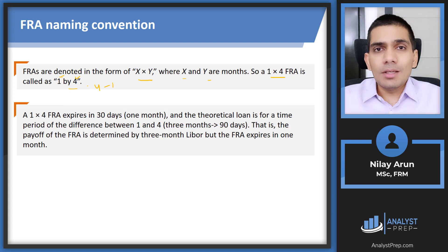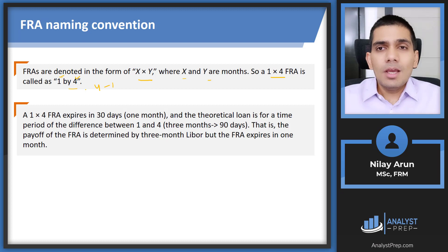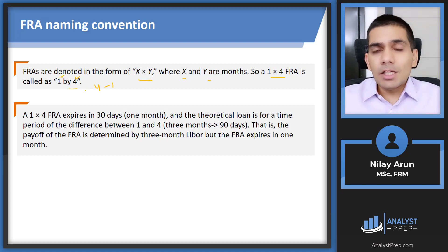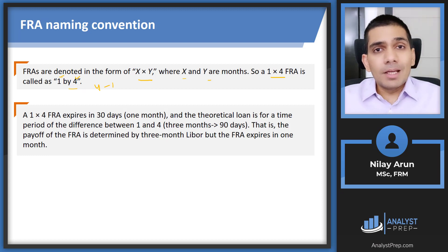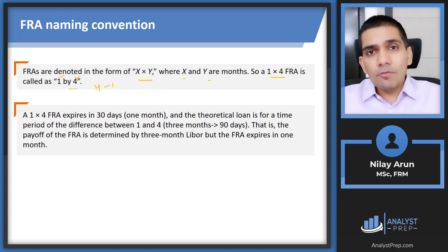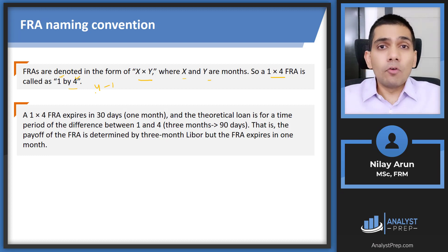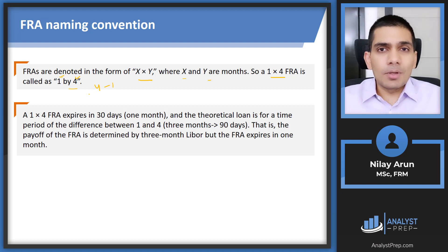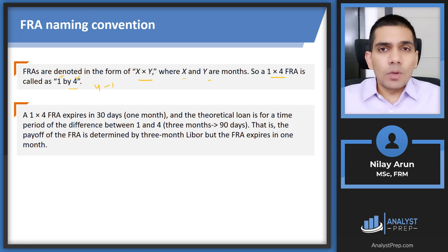For FRAs we take one month as 30 days, so multiply the number of months by 30 to get days. The naming convention can cause confusion — for a 1×4, some people wonder: is it a one-month loan starting four months from now, or a four-month loan starting one month from now? Here is a simple trick to avoid that confusion.